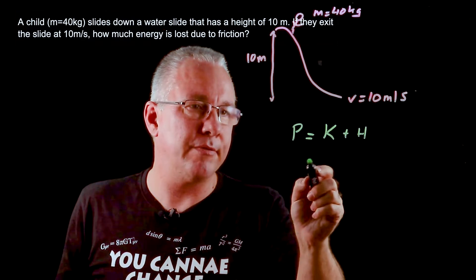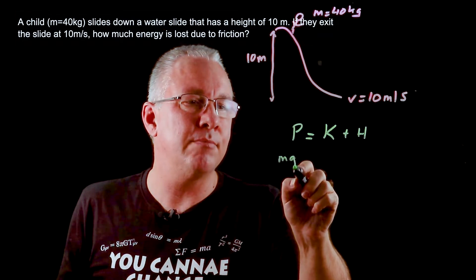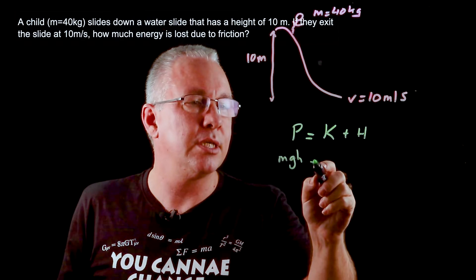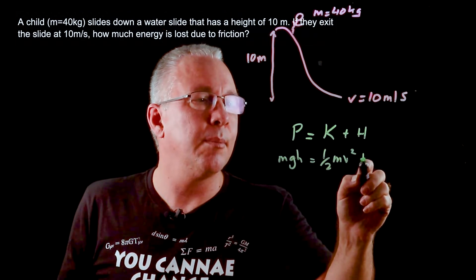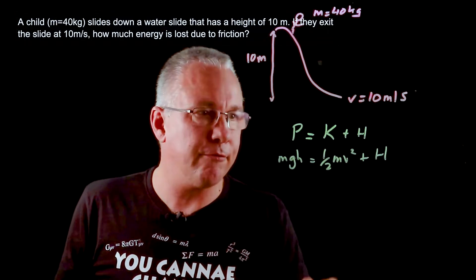Now we can substitute everything in. What we have is mgh which is our formula for potential energy equals the kinetic energy which is a half mv squared plus the heat that we're looking for.